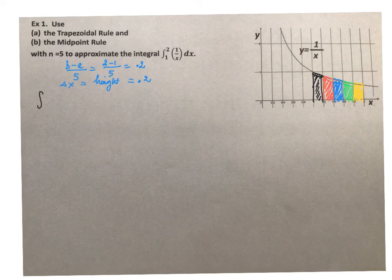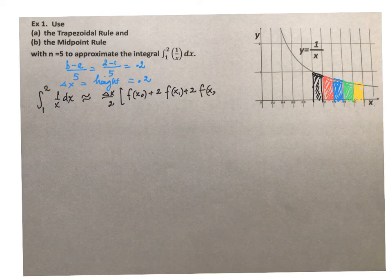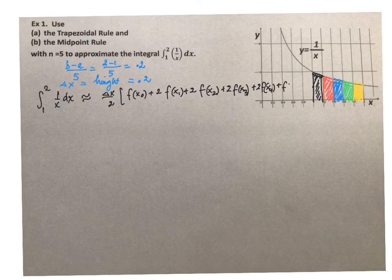So we're using the trapezoidal rule as an approximation to the actual answer. The precise answer is the integral between 1 to 2 of the function 1 over x dx and the trapezoidal rule is the approximation. So let's write down the approximated answer: delta x over 2 times f of x0 plus 2 times f of x1 plus 2 times f of x2 plus 2 times f of x3 plus 2 times f of x4 and plus f of x5.